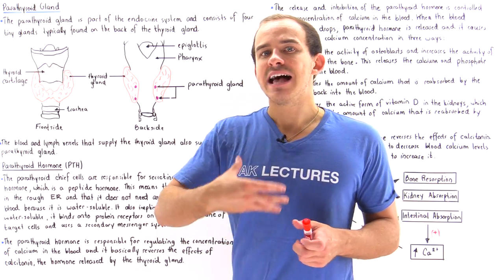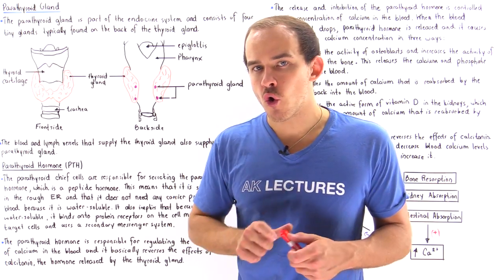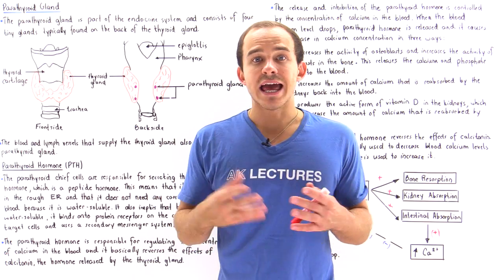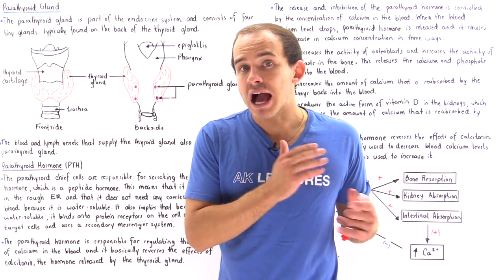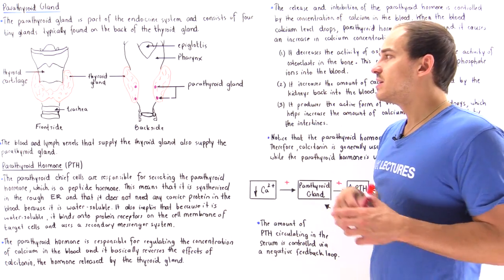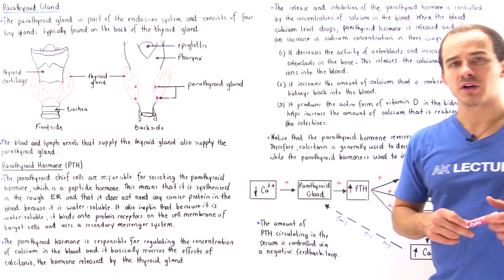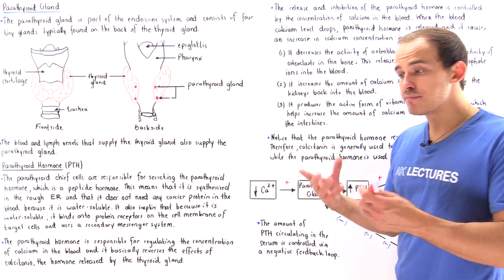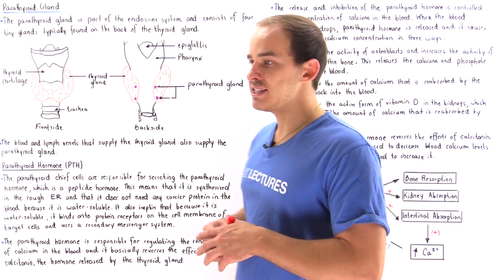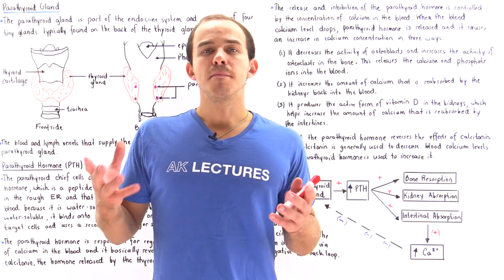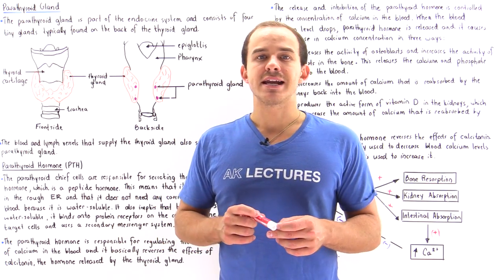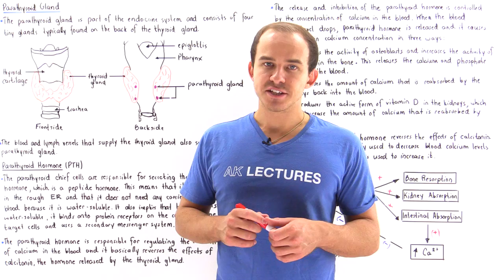Together, the calcitonin hormone released by the thyroid gland and the parathyroid hormone released by the parathyroid gland are responsible for regulating and maintaining the amount of calcium found inside our blood plasma.